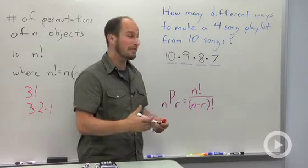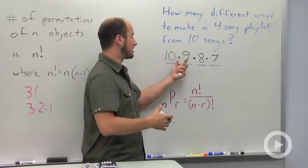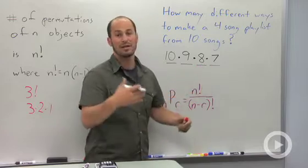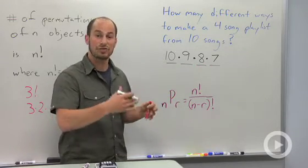So the number of different four-song playlists from ten songs is just going to be 10 times 9 times 8 times 7. We could plug that into a calculator, but I'm not terribly concerned with what the numeric value is.